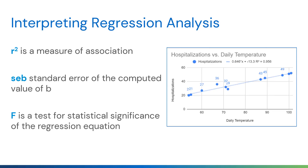The measure of association to look for in regression output is the r-squared value. When doing a simple regression with just two variables in Excel or Google Sheets, you can generate an r-squared value by adding a trendline and checking the box to display it. In this example the value is 0.95. Even though this is fictitious data with no real relationship, the line appears very linear.